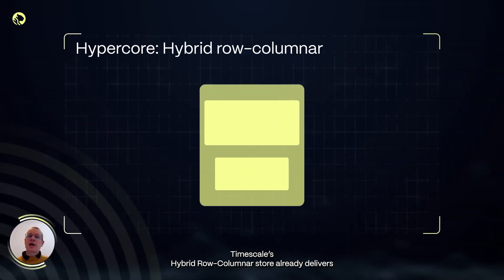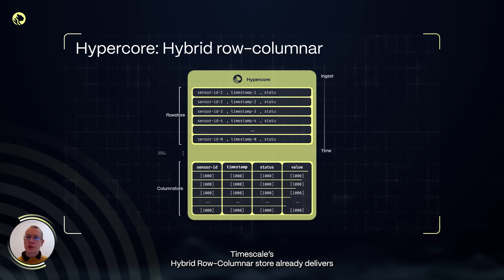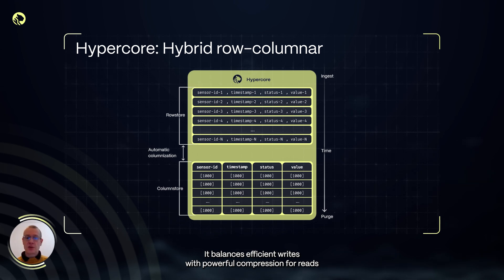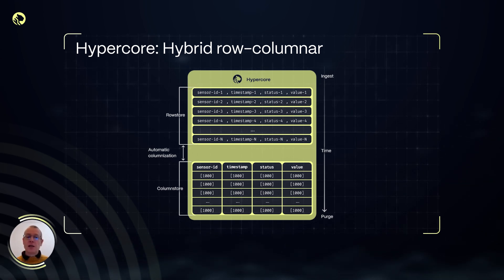TimescaleDB's hybrid row-column storage already delivers excellent performance for time series data. It balances efficient writes with powerful compression for reads. Now we're taking it even further.